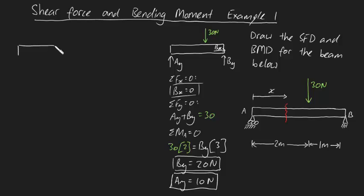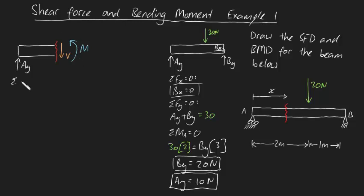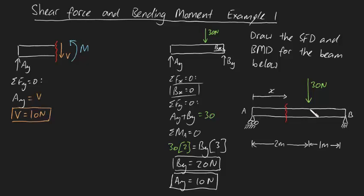Here is our bar with the cut made along here. The external force acting on this section is AY. Because we've made a cut, the internal forces now pop out — we're going to have shear force V and bending moment M. Using the sum of forces in the Y direction equals zero, AY must equal V, which means V equals 10 Newtons. We've found our shear force for the domain between 0 and 2 meters.